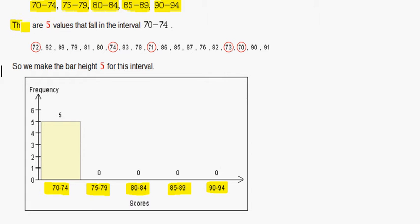There are 5 values that fall in the interval between 70 and 74. We have 72, 74, 71, 73, and 70. So in the category of 70 to 74, there are 5 numbers. So we make a bar up to 5. That is the frequency of which they occur.